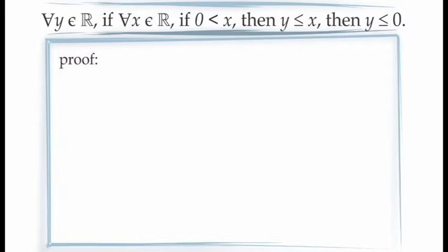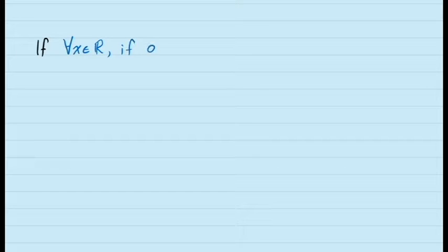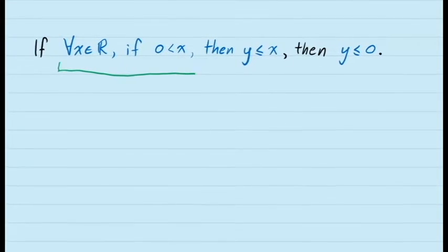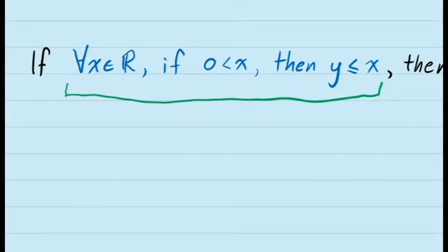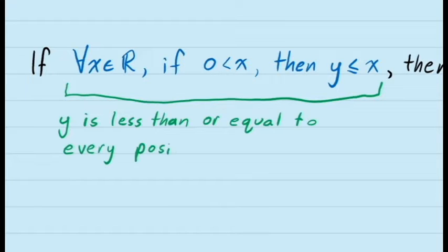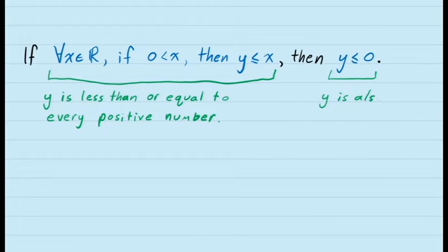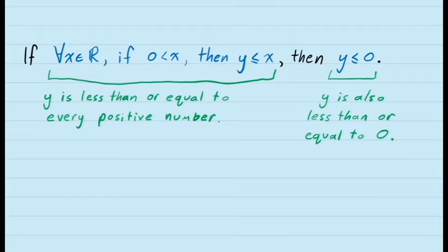Let's first try to figure out what this means. This statement is saying that for any value of y in the real numbers, a certain conditional statement is true. The antecedent is itself a conditional statement: for all values of x in the real numbers, if x is greater than 0, then y is less than or equal to x. This describes a property of y — if y is less than or equal to every positive real number, then the consequent says y must also be less than or equal to 0. In other words, if a real number y is less than or equal to all positive numbers, it automatically inherits the property of being less than or equal to 0.